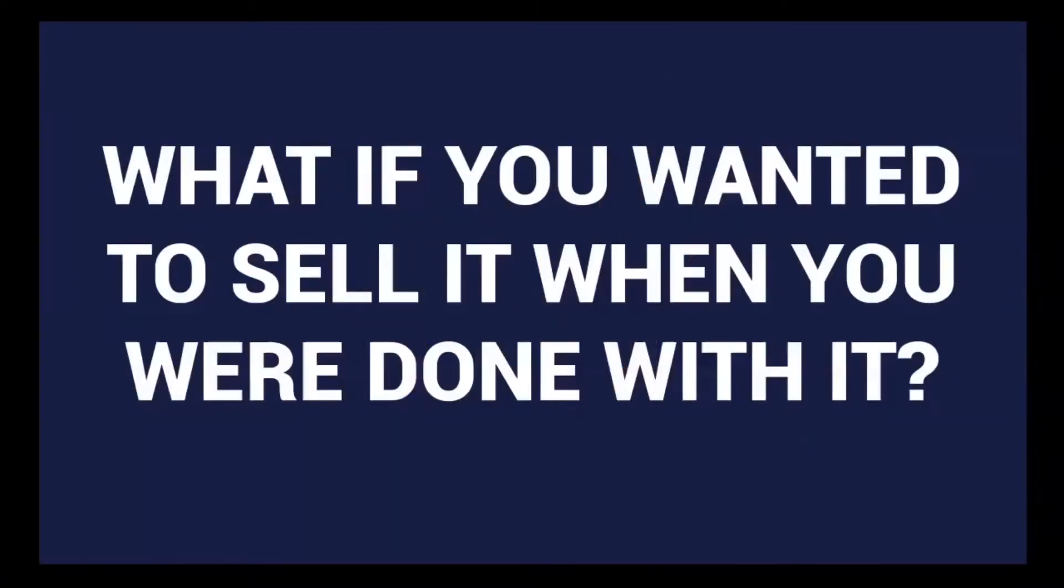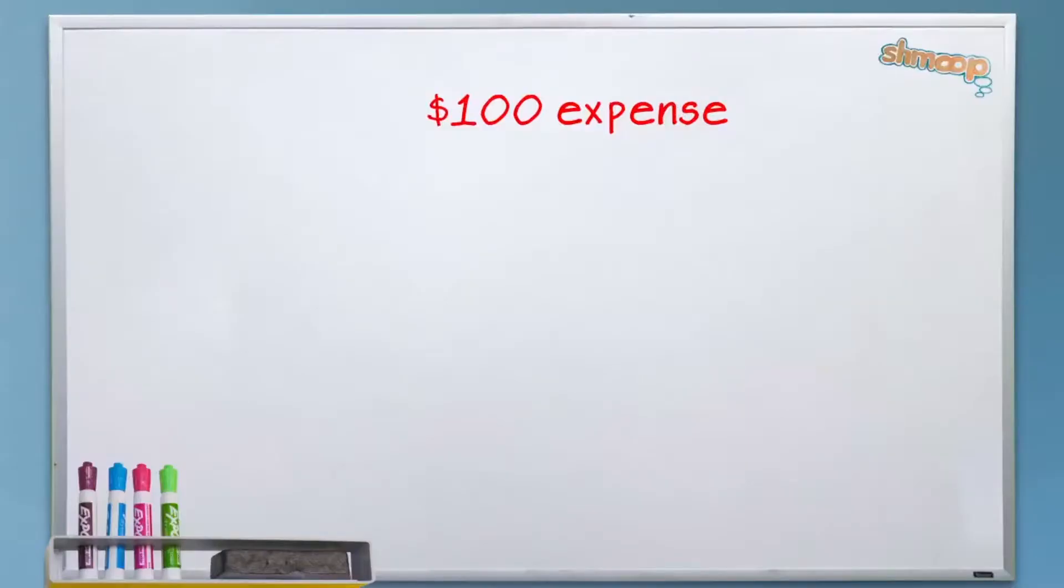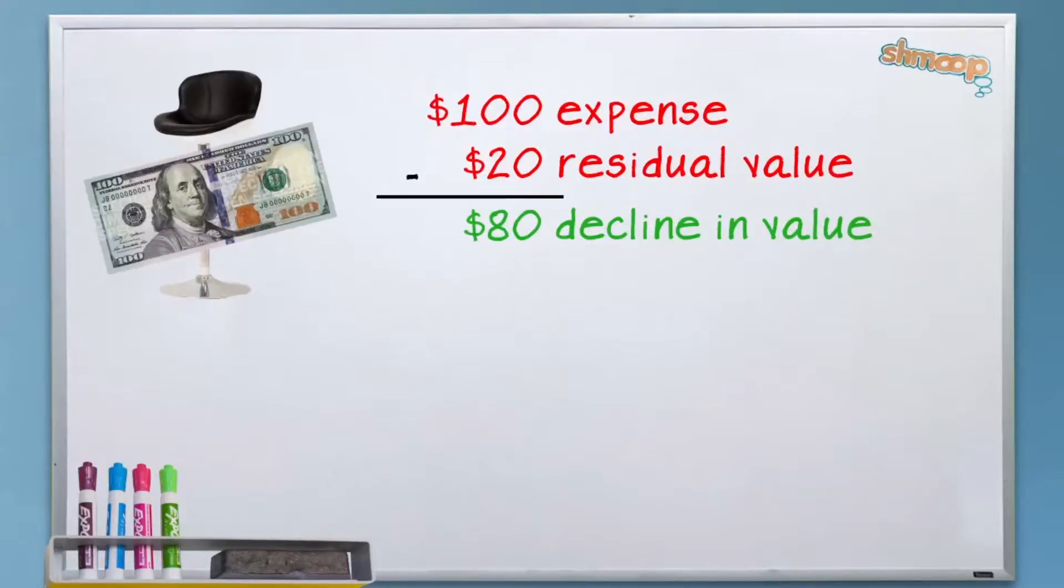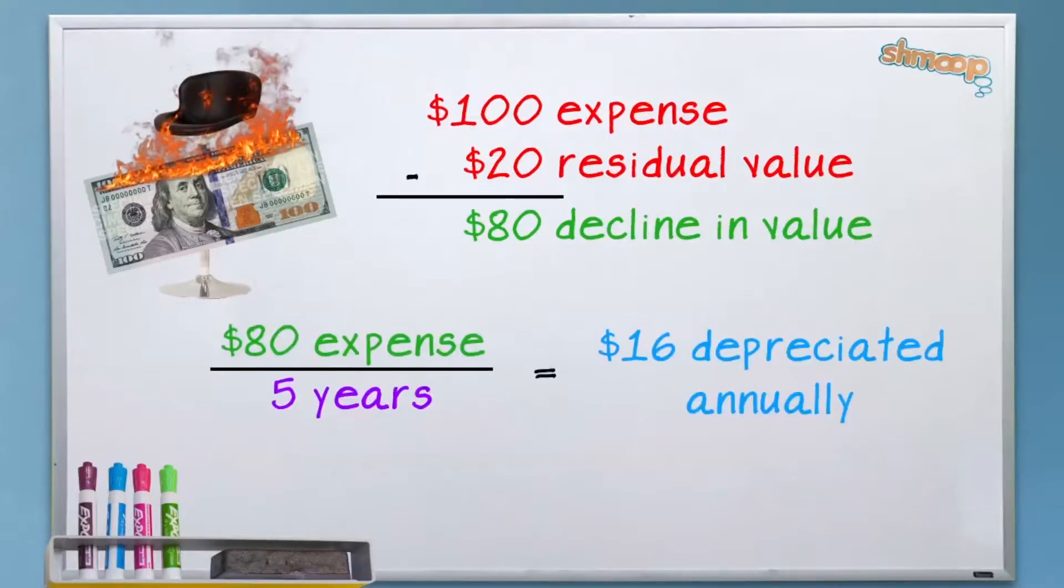What if the stool is worth $20 after five years when you sell it used on eBay? That is, its residual value is 20 bucks. It will have lost $80 in value during those five years, not a hundred. So what do you do? You don't depreciate the whole $100 in value of the stool as if it was kindling at the end. You just depreciate $80 of it or $16 a year for five years.